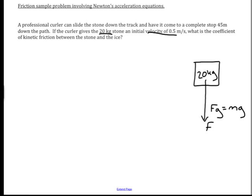Any object being pulled on by gravity is going to have a weight. Fg is equal to mg. I'm going to go ahead and calculate it: 20 kilograms times negative 9.8 meters per second squared. That comes out to a weight of negative 196 newtons. I'm doing that now because I know I'm going to need it.